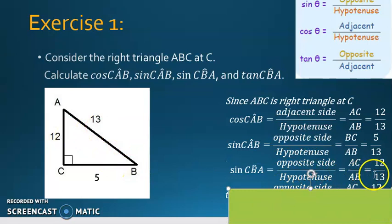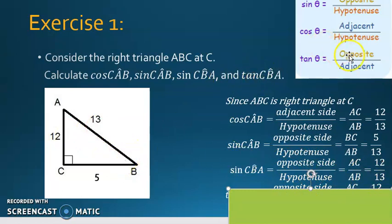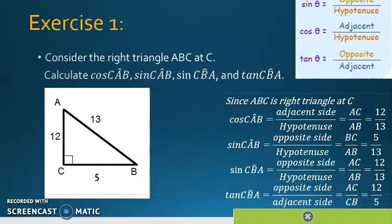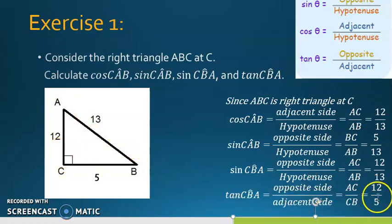Finally, tangent CBA: according to the rule it's opposite over adjacent. The opposite of B is AC, and the adjacent is CB, so tangent CBA is 12 over 5.